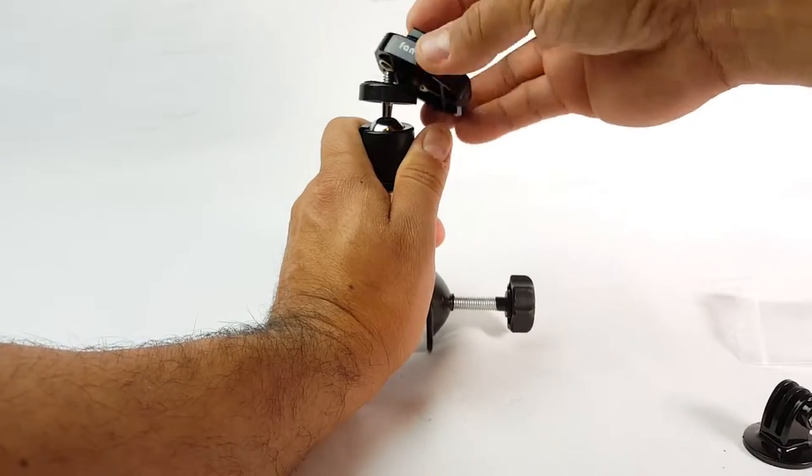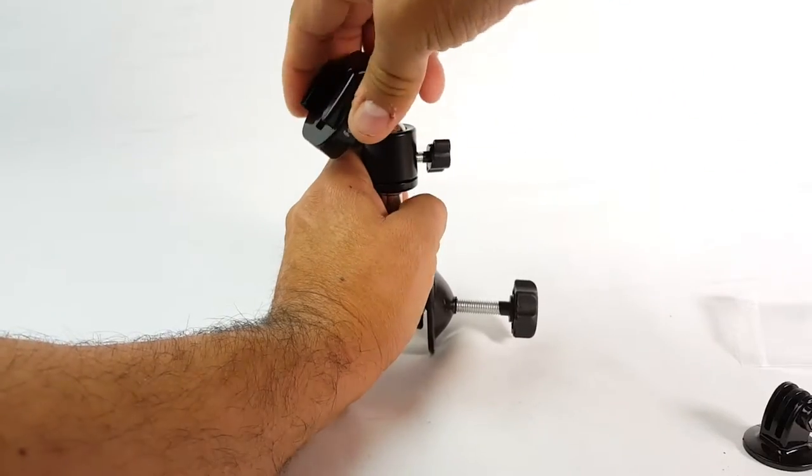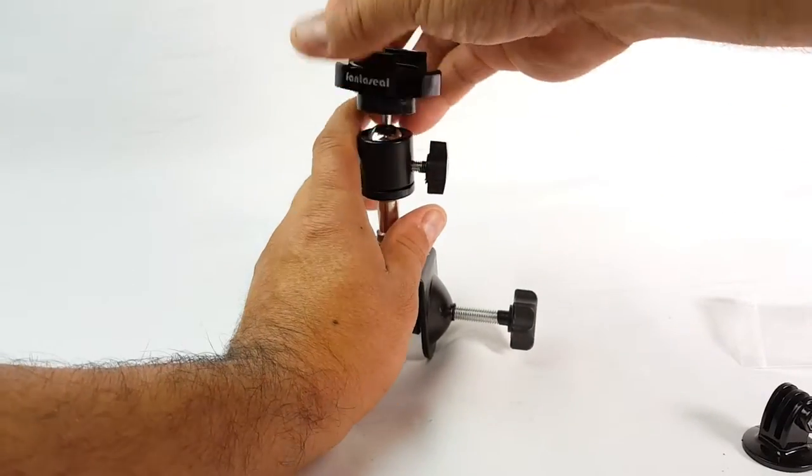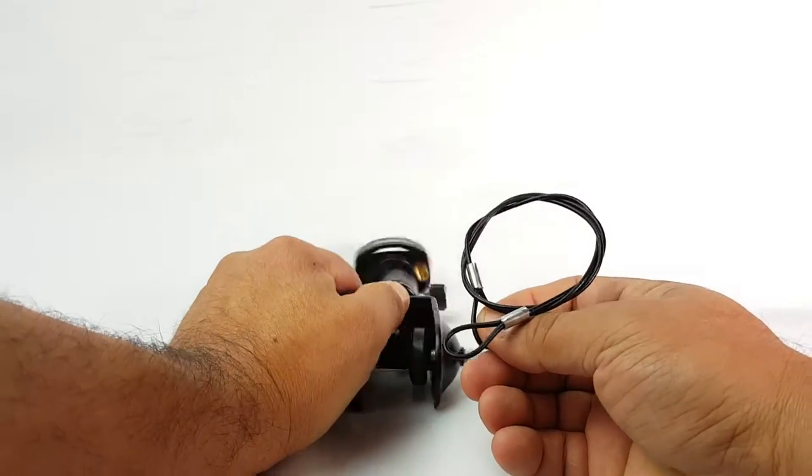And it's nice that you could put it either here or here and then adjust it whatever way you want, even if you want to take shots sideways. There you go, nice clamp. You also have this cord here you could attach.